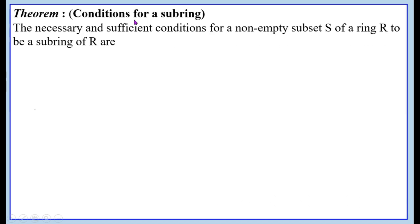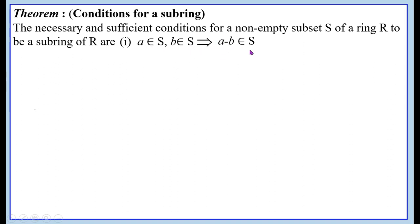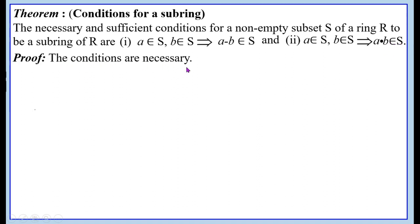Conditions for a sub-ring. The necessary and sufficient conditions for a non-empty subset S of a ring R to be a sub-ring of R are: First condition — A belongs to S and B belongs to S implies A minus B belongs to S. Second condition — A belongs to S and B belongs to S implies A·B belongs to S. That is, we take any two elements from S; the difference must be in S and the product must also be in S.